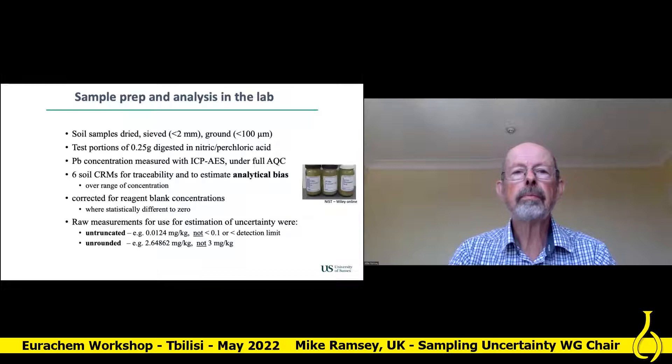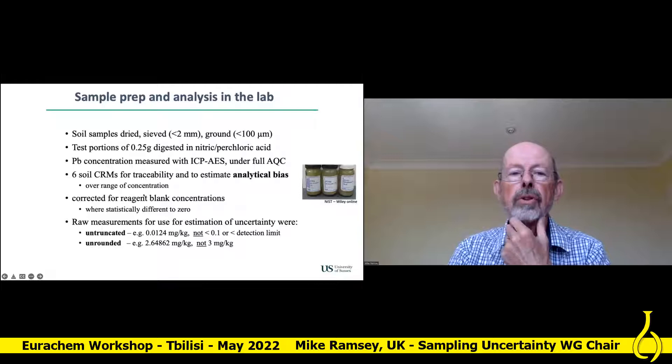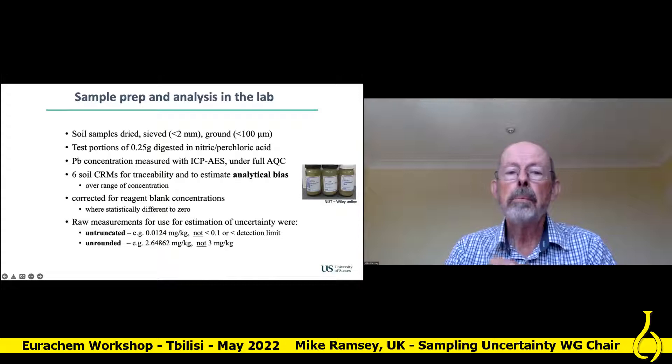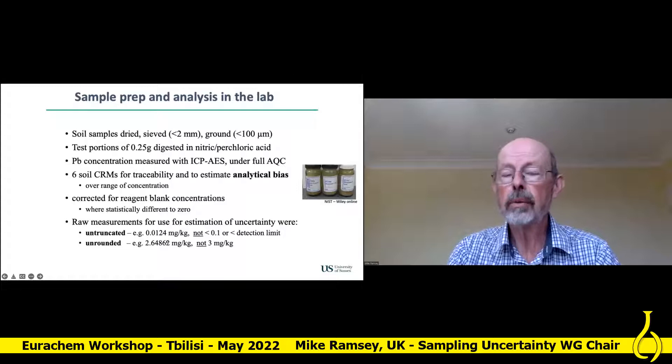It's a bit analogous to analytical methods. The sampling prep and analysis was routine — sieving, drying, acid digest, ICP with full quality control. Six CRMs were used to estimate analytical bias over a range of concentration, and reagent blank correction was used where necessary. Importantly, the results weren't truncated in any way — not at the detection limit or rounded. If you do have rounded results, you'll get a distorted view of the uncertainty, so you really need to get the unrounded values from the lab.